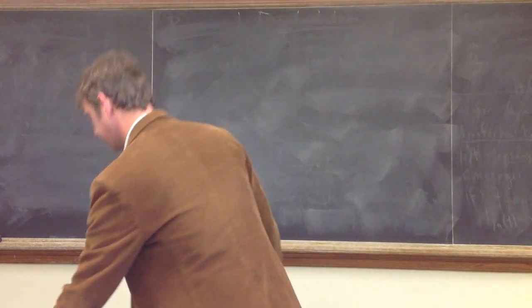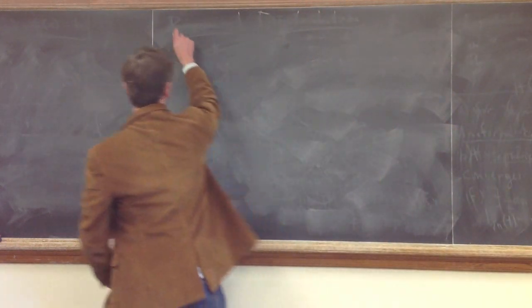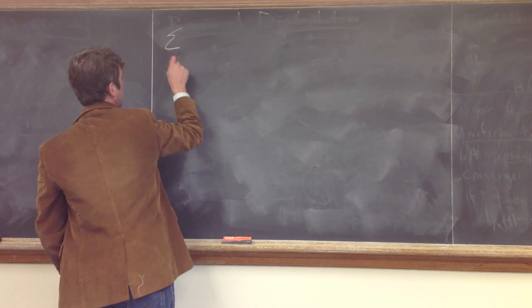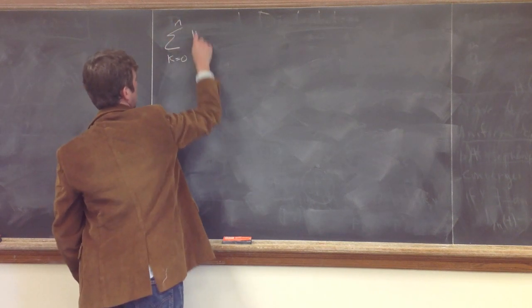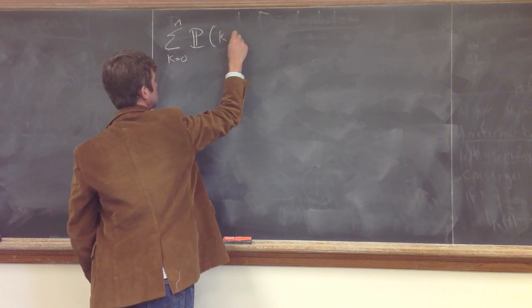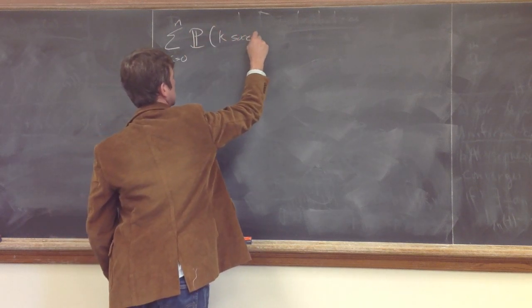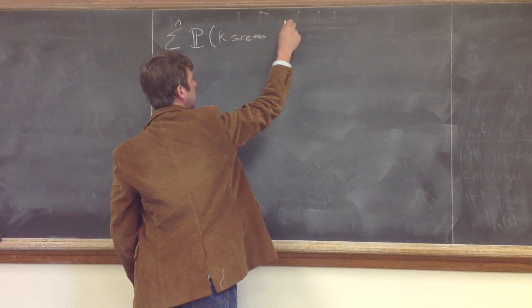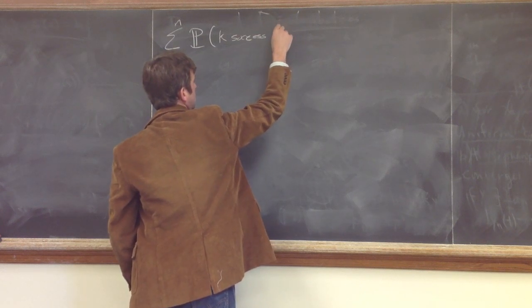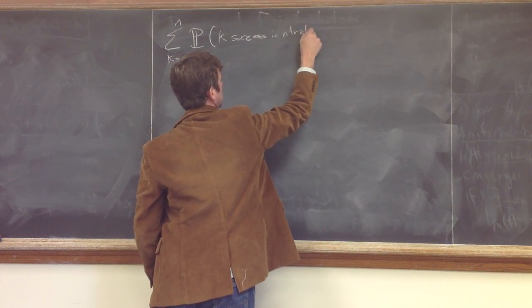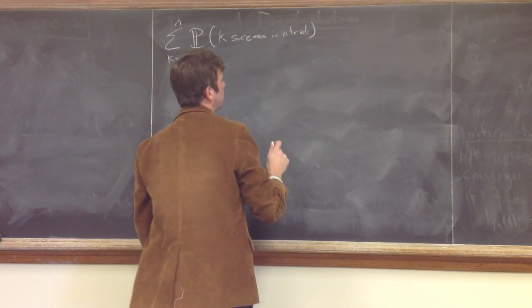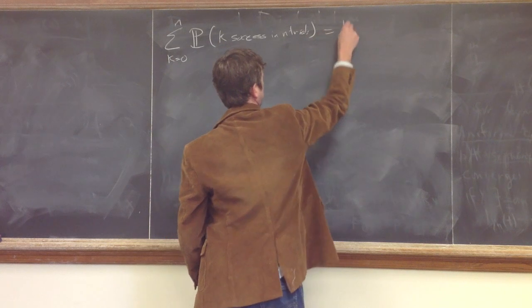Okay, so what we learned from the last, what we just wrote up was we can write a couple different ways. We can sum over all the possible number of successes up to n, and we sum the probability of k success in n trials, and that, of course, has to be equal to 1.